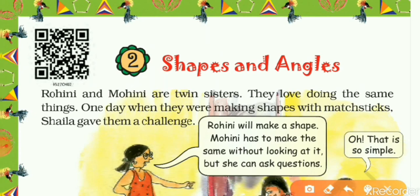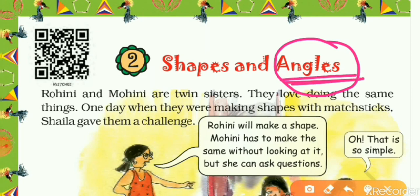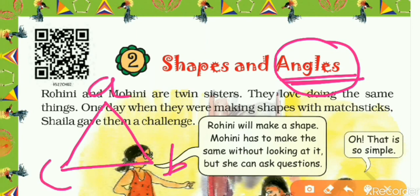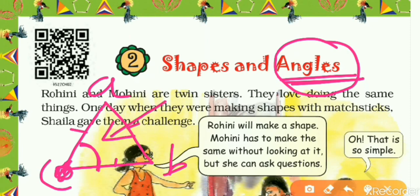The second word is angles. We will define this word in two different ways. First, let's take a triangle and name it ABC. You can see it has three sides: one, two, and three. Now check side AC and side CB — these two sides are joined at a point, which is point C. So they are forming an inner portion, and this inner portion is known as an angle.